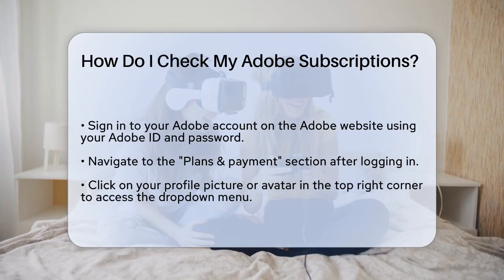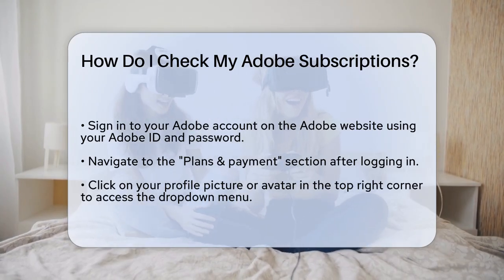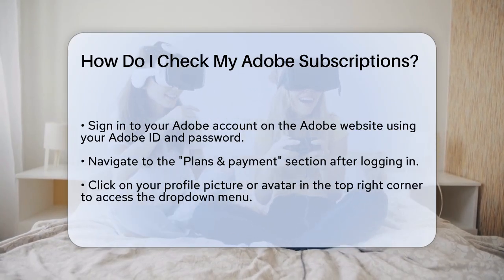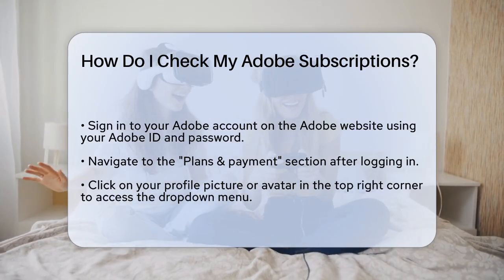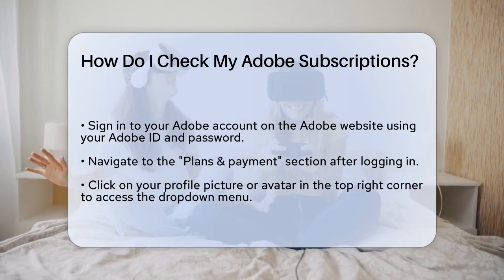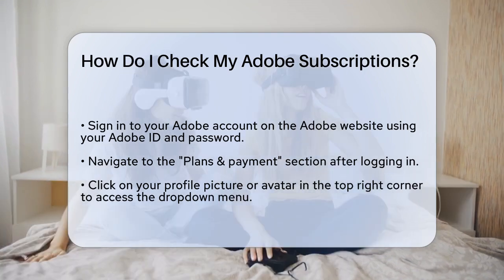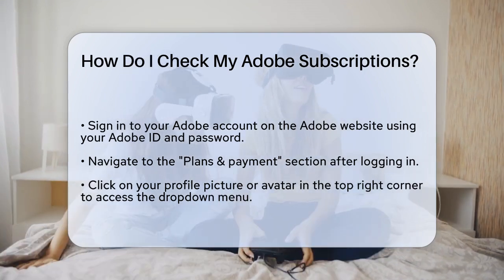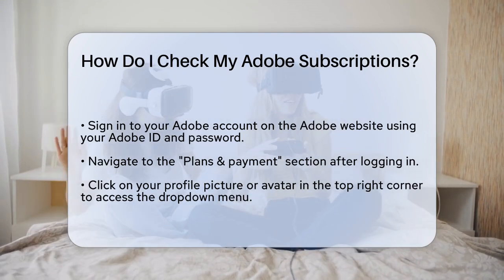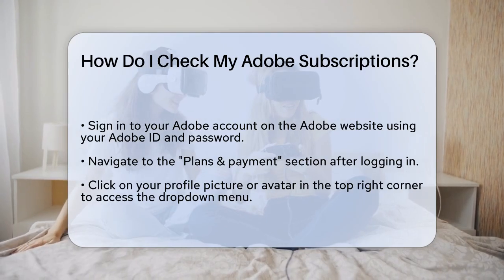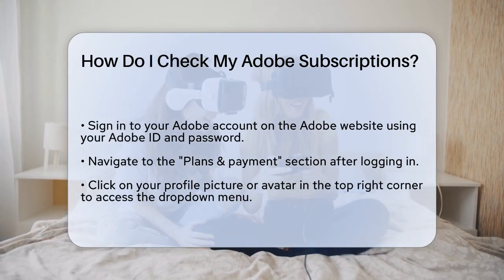Once you're logged in, navigate to the plans and payments section. This is where you can see all your active subscriptions and payment information. To get there, simply go to the Adobe website, sign in, and then click on your profile picture or avatar in the top right corner.